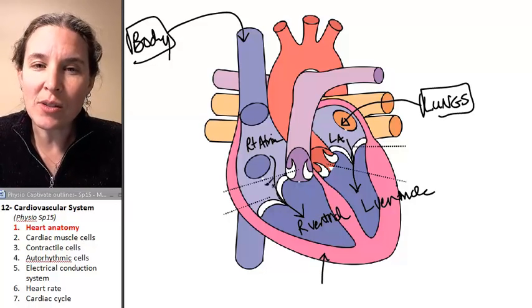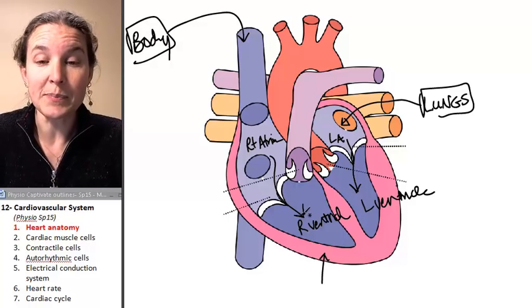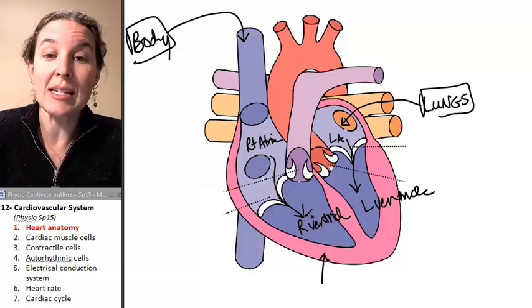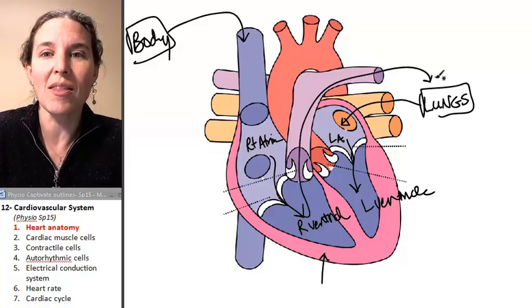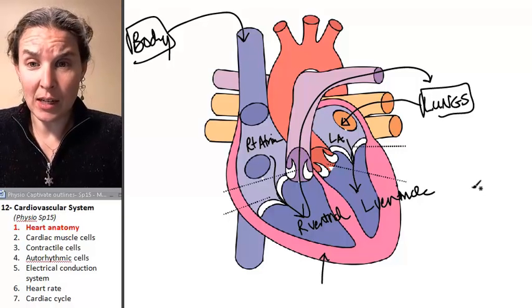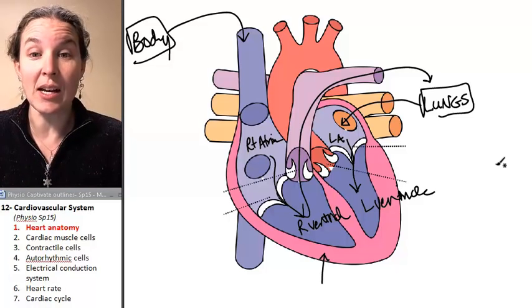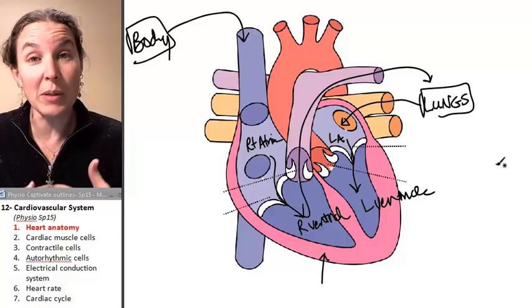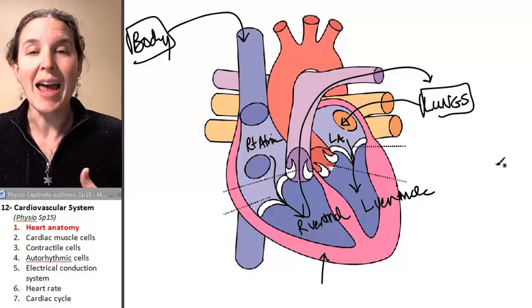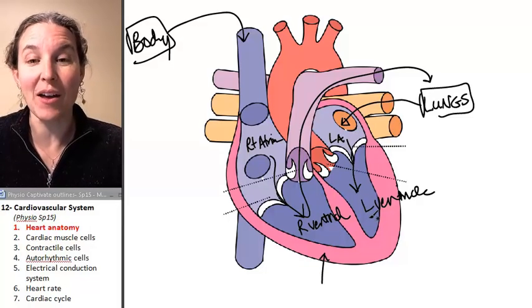The right ventricle, since it got blood from the right atrium, and that was used up blood, the right ventricle is going to take the used up blood and pump it to the lungs. Why would we pump used up blood to the lungs? Because we're going to do gas exchange. We're going to get rid of the carbon dioxide in that used up blood, and we're going to replace that with oxygen, and then we have now fresh oxygenated blood to come back through.